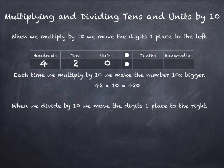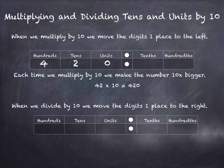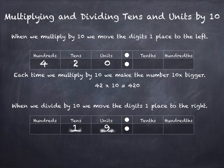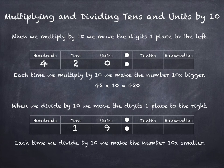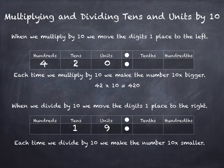Now when we divide by 10 we move the digits one place to the right. Here's a handy grid and our tens and units — this time 19. Each time we divide by 10 we make the number 10 times smaller. So we're going to make 19 ten times smaller by moving both those digits one place each to the right.